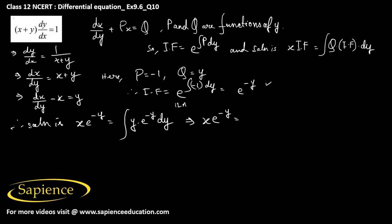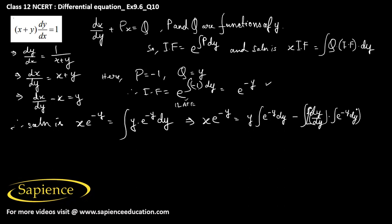According to the ILATE rule, we should use the algebraic function as the first function and the exponential one second. So we write y times the integral of e to the power minus y dy, then minus the integral of the derivative of y times the integral of e to the power minus y dy, all integrated.